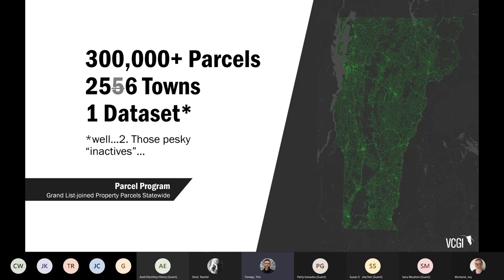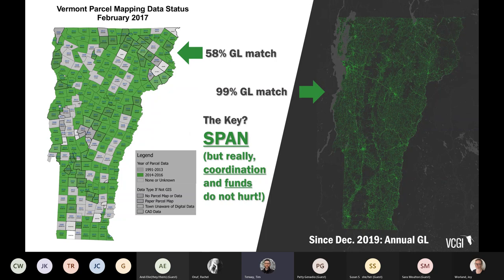Switching gears — perhaps the most common data set we offer statewide is through our parcel program: statewide annual grand list joined property parcel data. What it is: it takes the municipal official grand lists that every town submits to the tax department every year and joins that grand list with the latest available digital parcel data we get from towns on a rolling basis. It rolls it all up into one uniform data set statewide. Even as recently as 2017 we only had slightly over half of all parcels matching the statewide grand list; we now have close to 100% match.